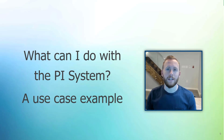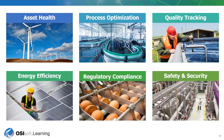So what can you do with the PI System? We'll take a look at one use case and show you an example of what life is like without the PI System and what it can be with the PI System. There are a number of outcomes that the PI System can help you achieve. These include asset health, process optimization, quality tracking, energy efficiency, regulatory compliance, and safety and security. There are more solutions that the PI System can help you with, but let's take a look at just asset health for now.